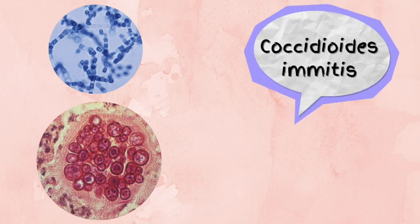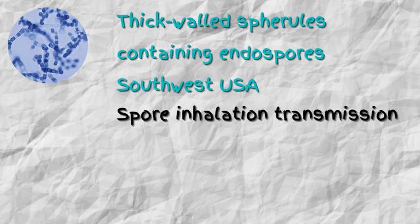For Coccidioides, you can see thick-walled spherules containing endospores. It is most commonly seen in southwestern parts of the United States, such as Arizona and California. It is commonly transmitted through spore inhalation. Now let's move on to the next organism.